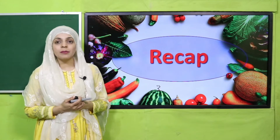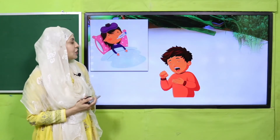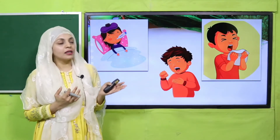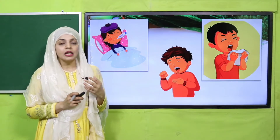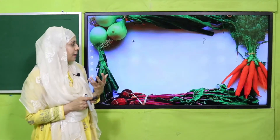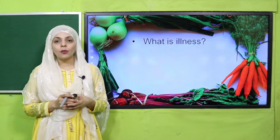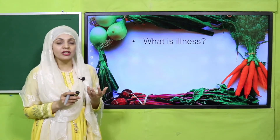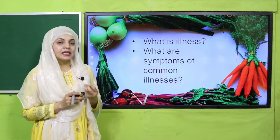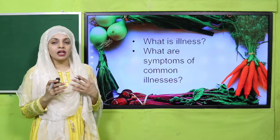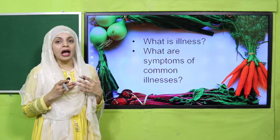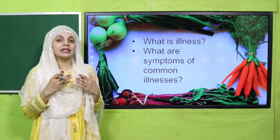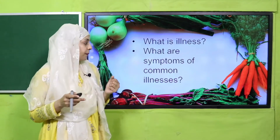Let's quickly recap what we did in the previous lecture. Quickly answer: what is happening to this boy? He is having a cough, she is having a fever, and the boy is having influenza or flu. In the previous lecture we discussed about different diseases. When your body is not fit or is having some symptoms of disease, it is called an illness. Symptoms of common illnesses include coughing, sore throat, and high fever — more than 98°F or 37°C.